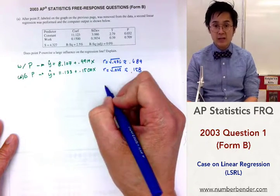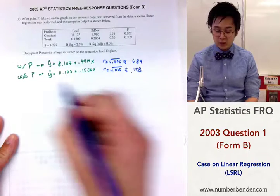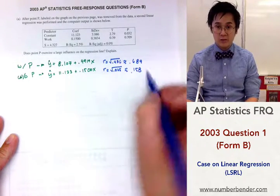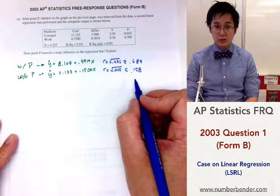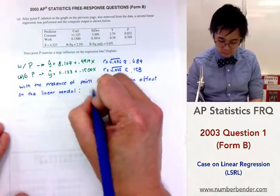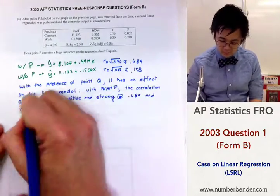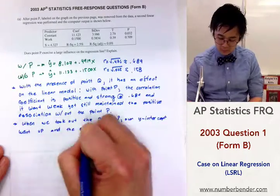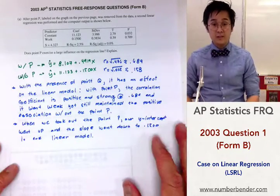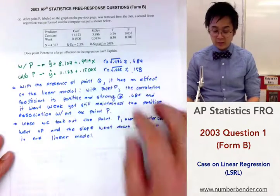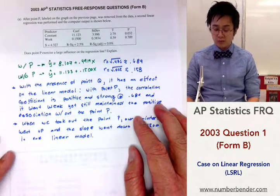So let's go ahead and write our answer for letter a in terms of the slope and the y-intercept, and in terms of the correlation coefficient. And this is how we're going to justify the large influence on the regression line or the linear model without the point p in our linear model.